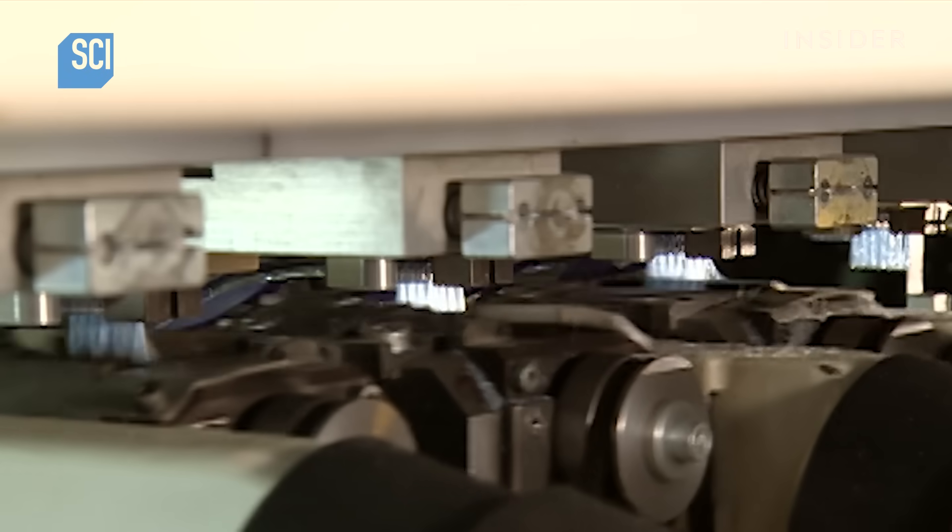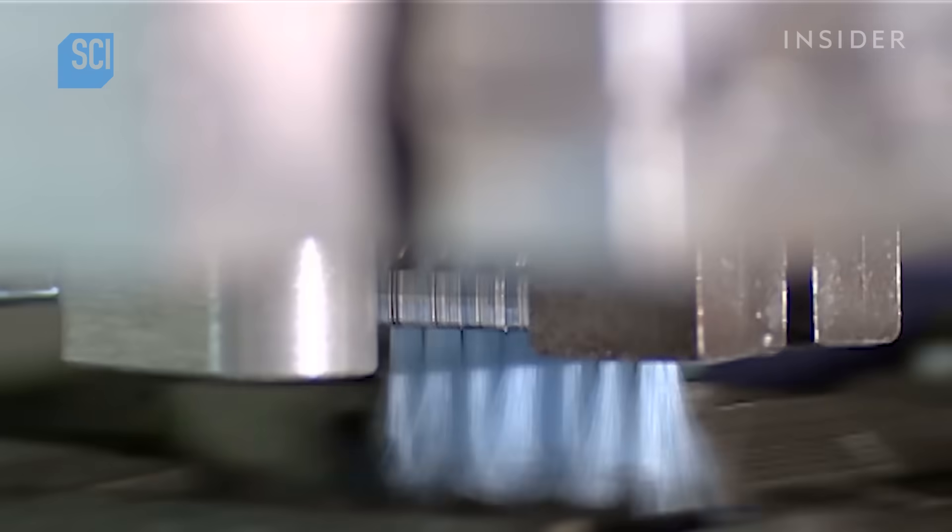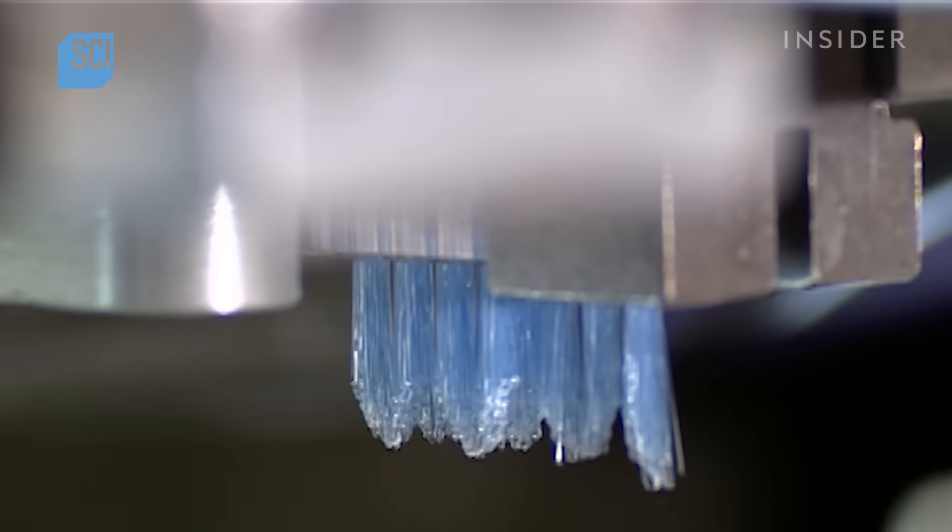Now it's time for a brush cut. These blades trim the bristles to about the same length. Another set of blades sculpts different types of edges, depending on the toothbrush model in production.